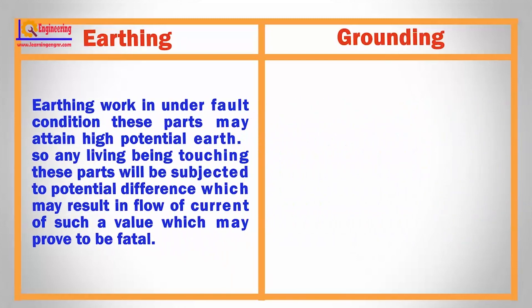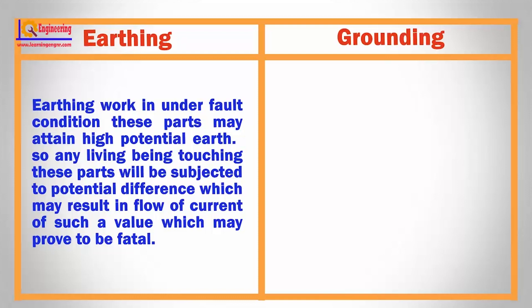Earthing works in under fault condition. These parts may attain high potential earth, so any living being touching these parts will be subjected to potential difference which may result in flow of current of such a value which may prove to be fatal.